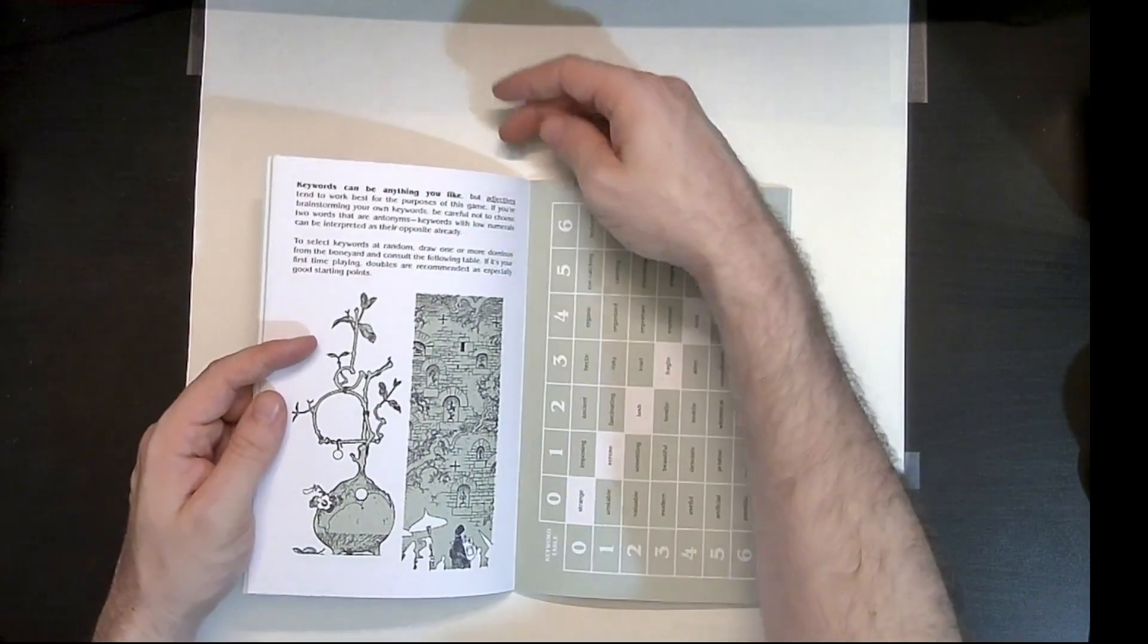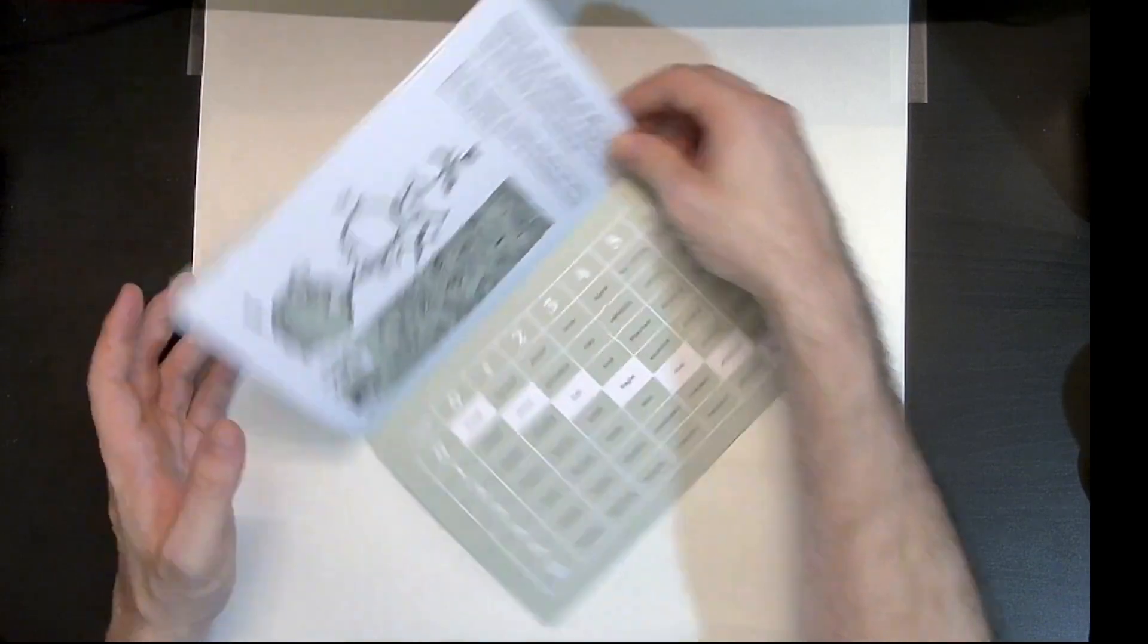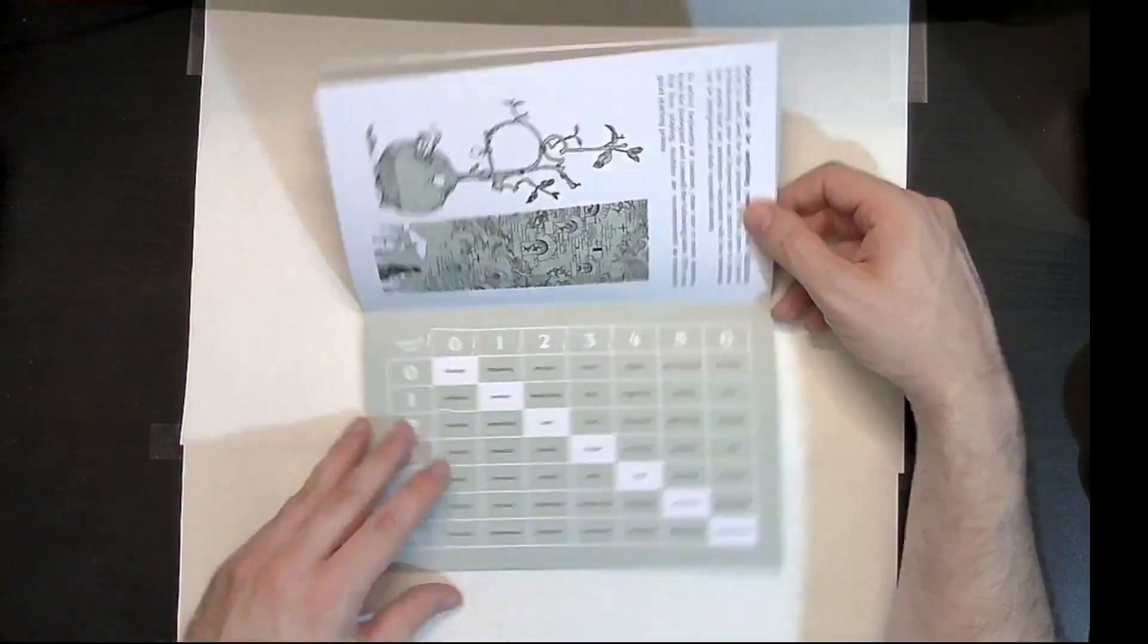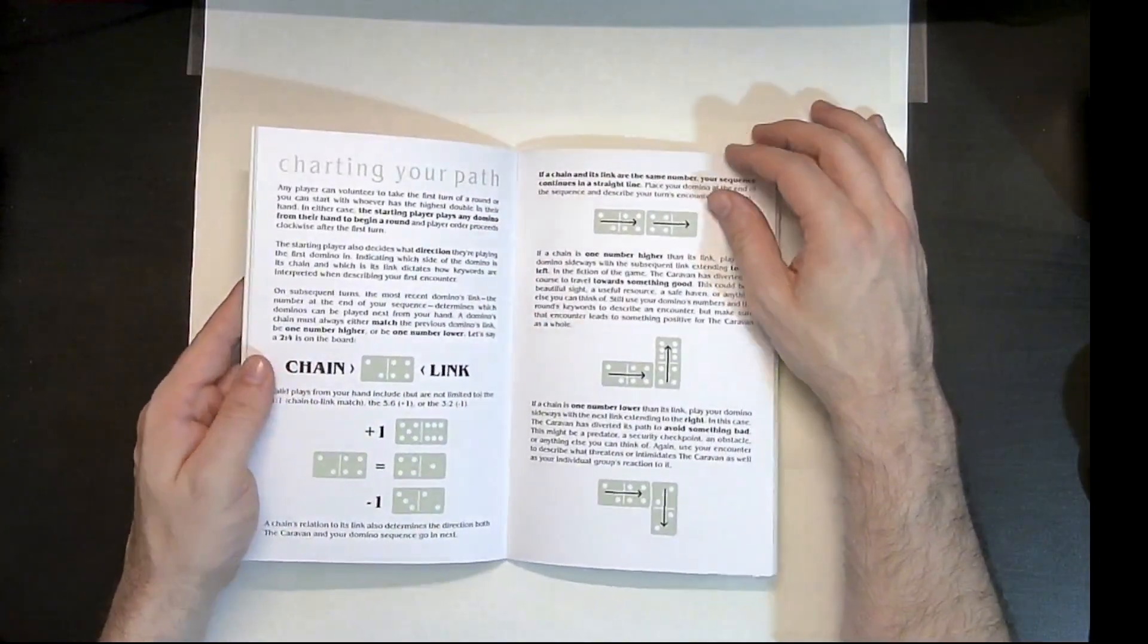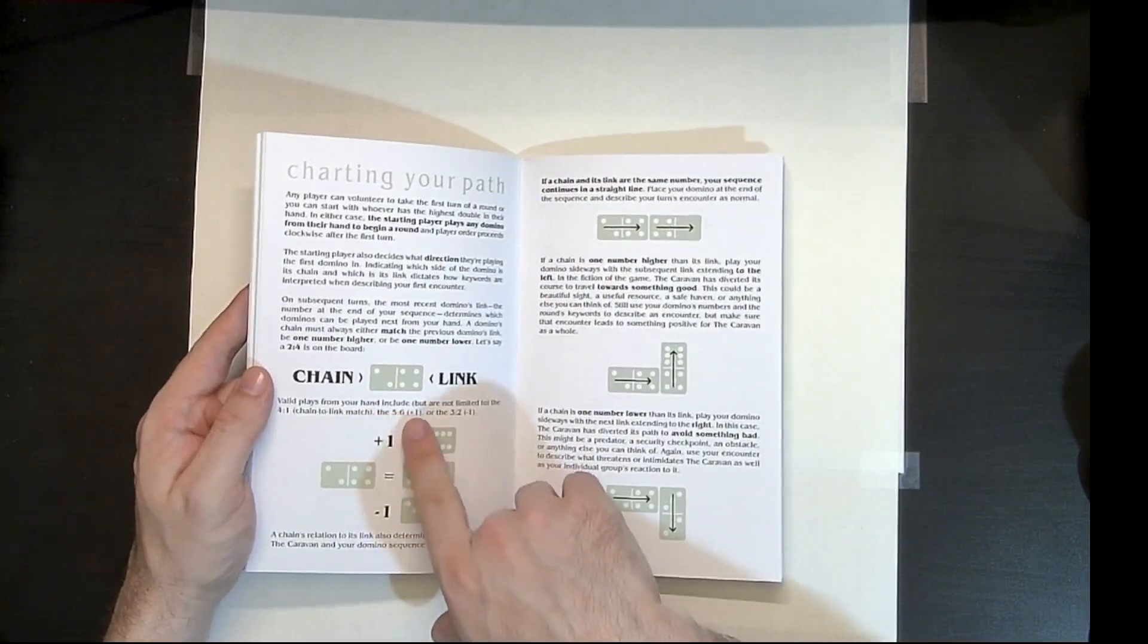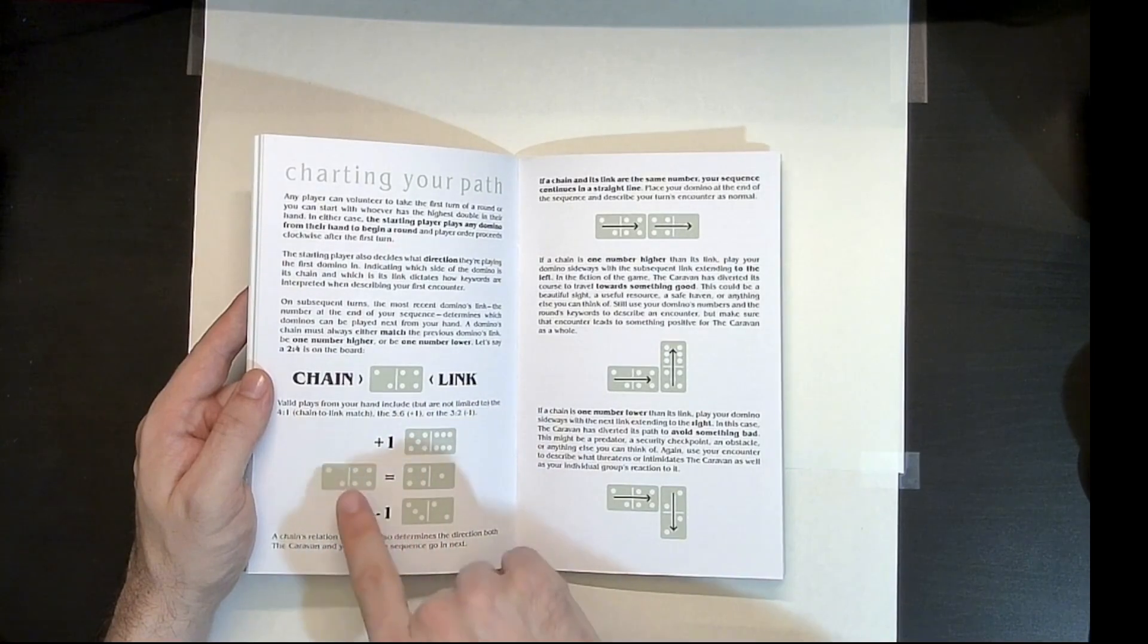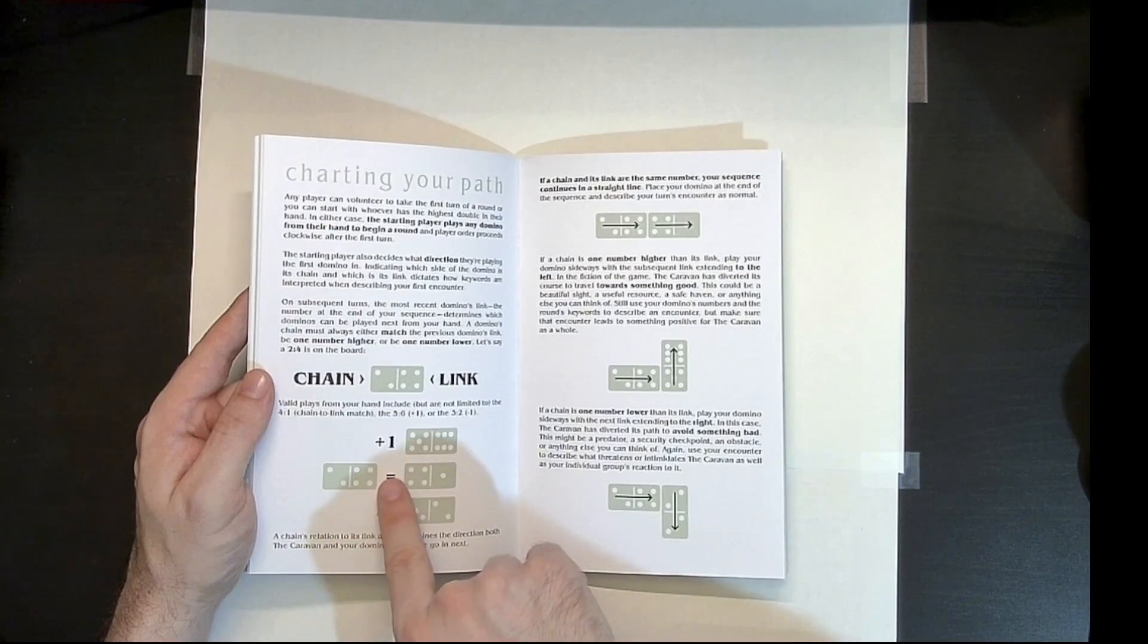Okay, I'm assuming, so yeah, it says here keywords can be anything you like, but adjectives tend to work best. And here are some randomized ones if you can't decide what you want. And then of course we start forming our path. So it says here, valid plays from your hand would include, but are not limited to basically one up, one equal, or one below what was just played before. And then you continue to make the chain.